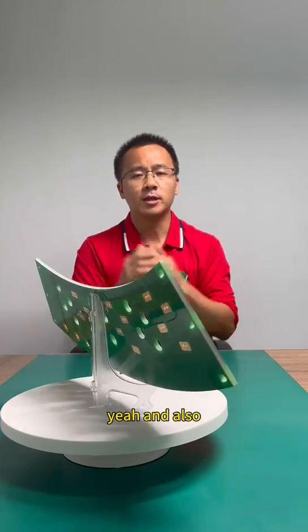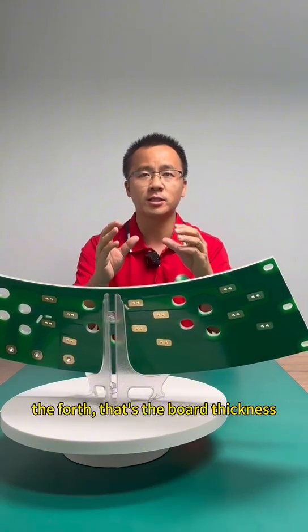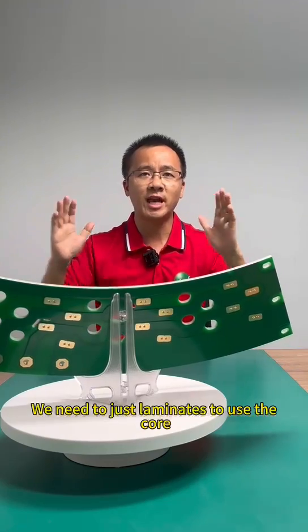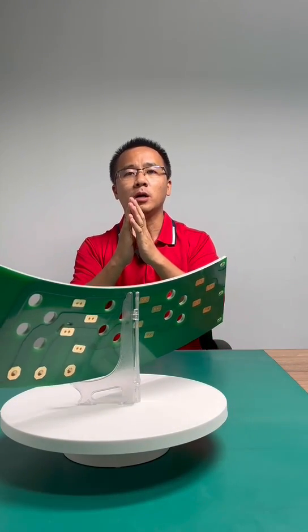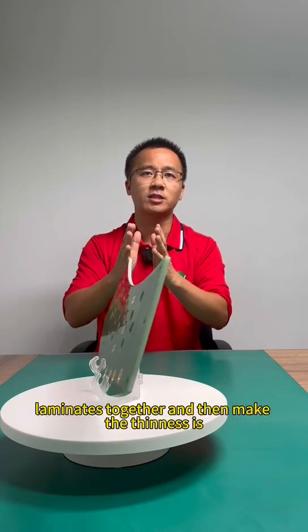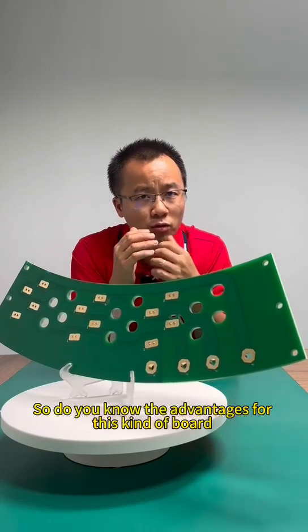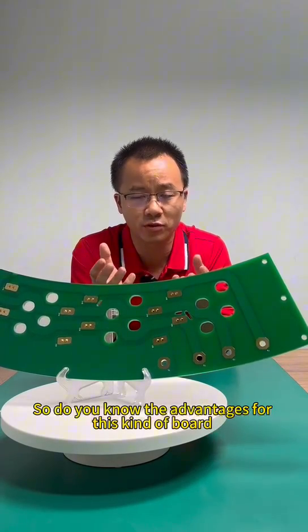And also fourth, the board thickness - we need to laminate, use the core material, laminate together and then make the thickness six millimeters. So do you know the advantages for this kind of board?